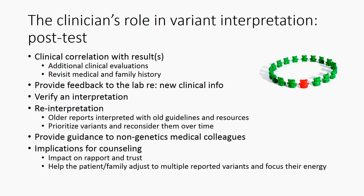Test reports also represent an interpretation of a variant at a given point in time. They are static and may have been limited by older interpretation guidelines and a lack of available genomic data. Given the dynamic nature of the genomics field, it would be important for a clinician to recognize when a report seems outdated, either because of the use of outdated terms such as mutation, or because the evidence outlined in the report does not support the interpretation based on current guidelines. A clinician may also want to prioritize certain variants and search for new data over time that would support or refute a potential role for a variant in a patient's health.